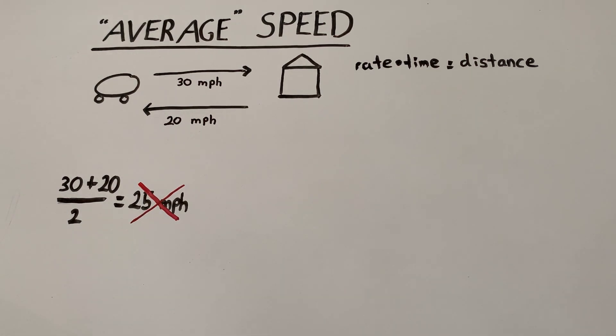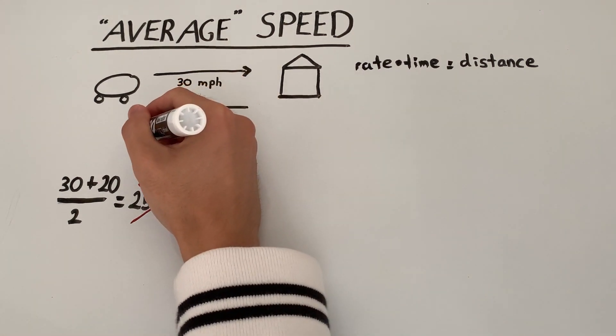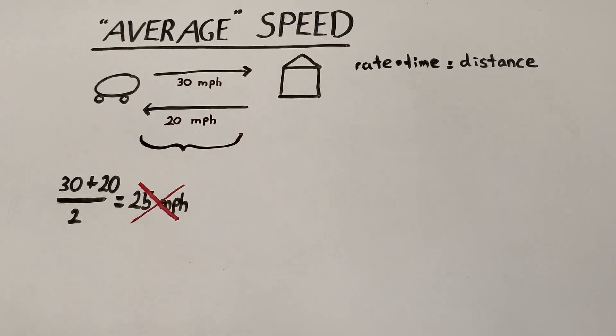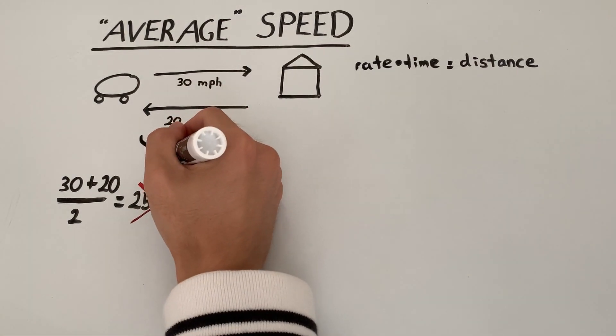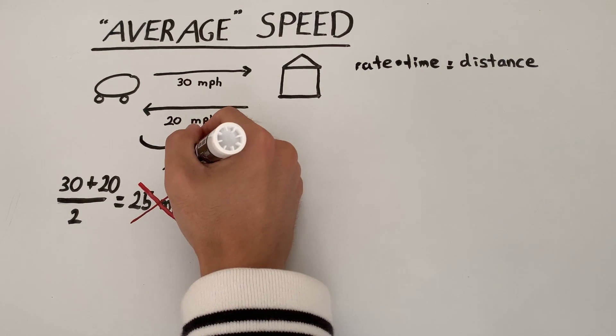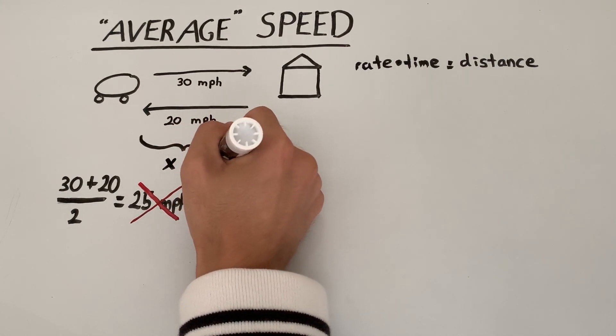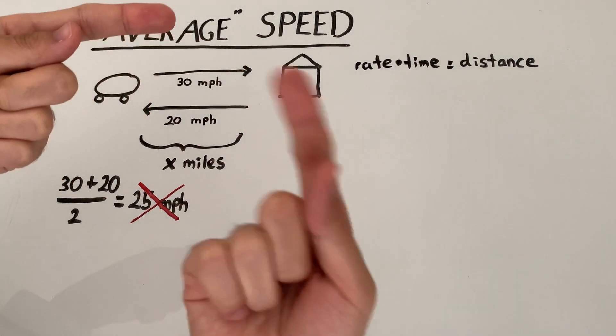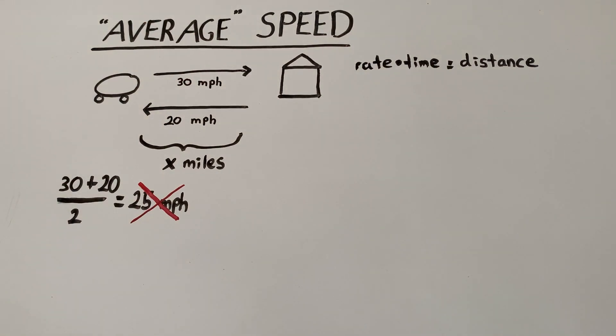We're not exactly given a distance, so it's up to us to introduce a distance. So let's say the distance between my place and grandma's house is x miles. Then the total distance would be x miles to grandma's place and x miles back. That's a total of 2x miles.